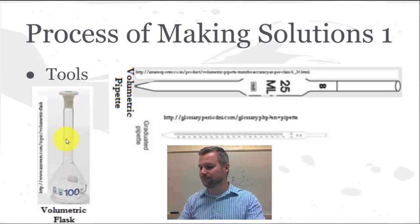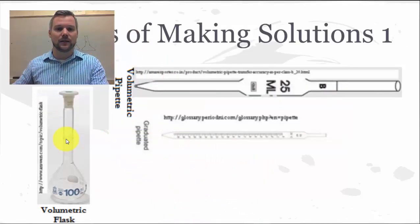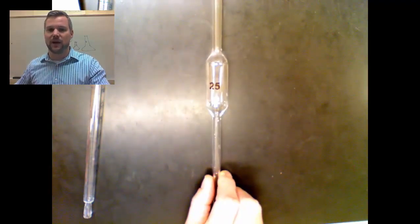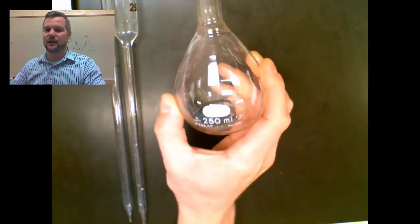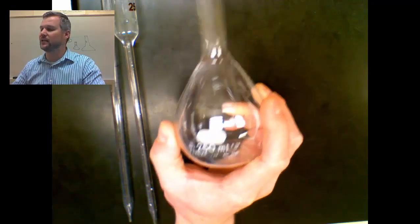Here's an example of a 25 mL volumetric pipette — if you look closely, there's a brown striped line on the pipette that's the 25 mark. Then we have the graduated pipette, which has a lot of graduations on it so we can measure many different values accurately. And finally, the volumetric flask — this one happens to be a 250 milliliter volumetric flask, and there's an etched line you can see on the neck of the flask.